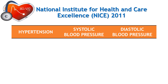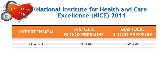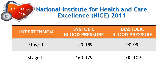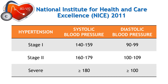According to the widely accepted NICE guidelines: Stage 1 hypertension means systolic blood pressure between 140 to 159 or diastolic blood pressure between 90 to 99 mmHg. Stage 2 hypertension means systolic blood pressure between 160 to 179 and diastolic blood pressure between 100 to 109. Severe hypertension is when systolic blood pressure is 180 or more or diastolic blood pressure is 110 or more.